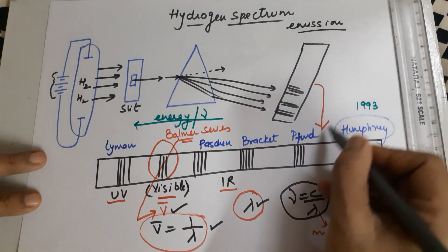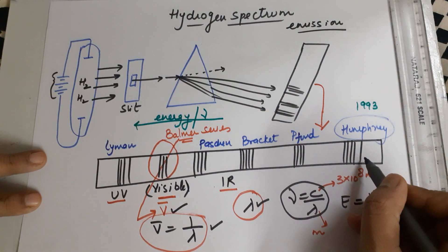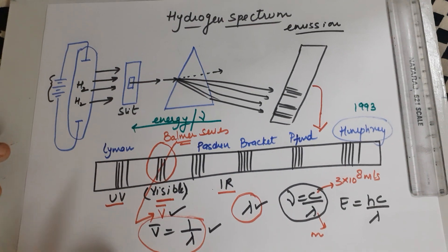The lines are in order of energy. Ultraviolet has higher energy and higher frequency. Humphrey would have the least frequency and minimum energy.